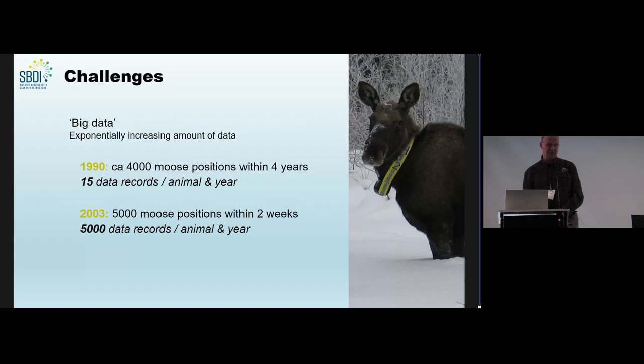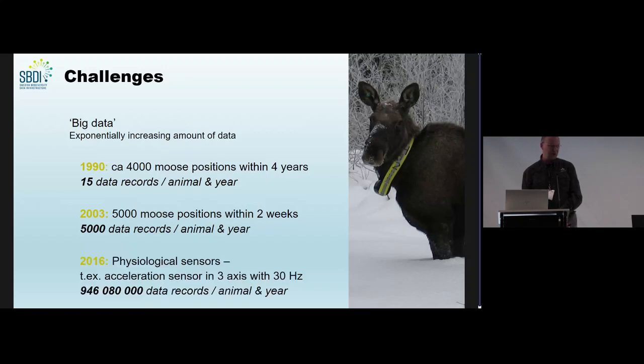13 years later, with a little more sophisticated GPS, we had 5,000 moose positions within two weeks. This amounted to 5,000 data records per animal and year. And then again, 13 years later, we are working with physiological sensors. For example, an acceleration sensor which measures acceleration in three axes with 30 hertz, 30 measurements per second.